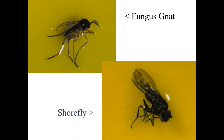Fungus gnats are in the upper left and shore flies in the lower right — many of you are probably familiar with what these look like. They're small black insects you'll get on sticky cards when monitoring, but be sure you can distinguish one from the other. Fungus gnats are more serious because the larvae can cause direct damage by chewing on roots and girdling plants. Shore flies don't do that — their larvae feed on algae and organic matter, but shore flies can be a great annoyance when they build up in high numbers in the springtime.